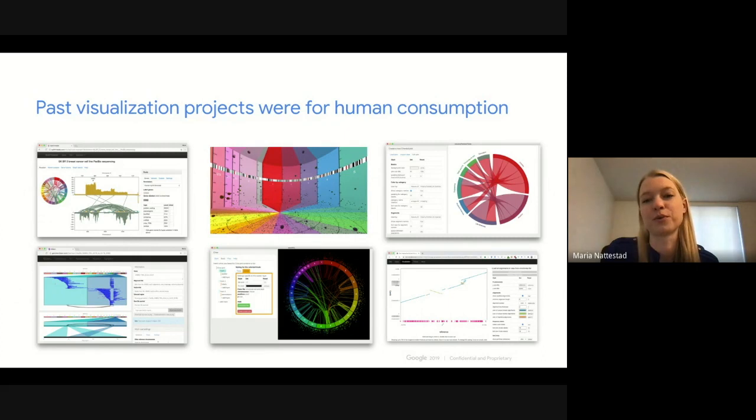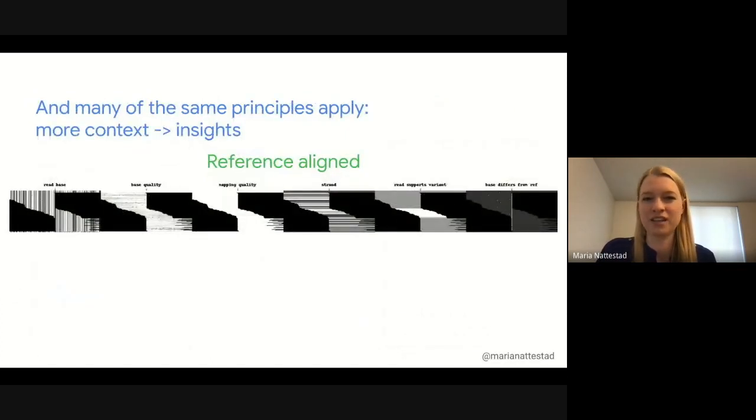My past visualization projects were all made for human consumption. I was always visualizing data that humans would look at. It is exciting for me to work on something like DeepVariant where I'm making a visualization for a computer. A really cool thing is that many of the same principles apply. If you give more context, then you can potentially give more insights. The human or the computer can make better decisions when there's more information and when you're showing it in a way that it can understand.